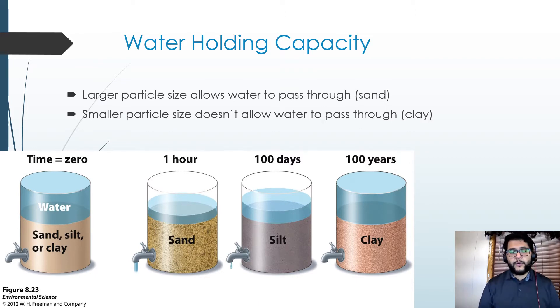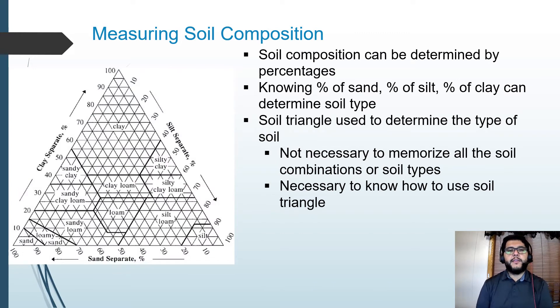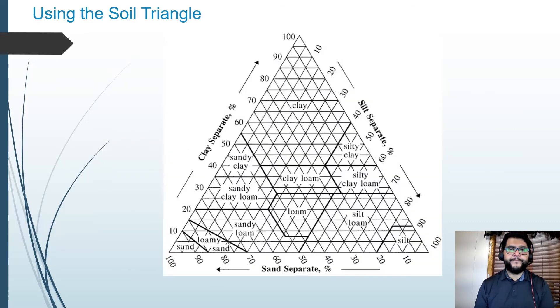We measure this using a soil triangle. It's important to note that you're going to see these probably on the AP exam in many multiple choice questions. You're going to have to know the percentages and be able to determine where on the soil triangle it falls. You don't have to memorize all these different soils—it's just important to know how to use the triangle and which is the best kind. You probably want to be somewhere in the middle of the triangle here towards loam or clay loam, because that means your soil is going to be able to hold enough water but it's still not going to hold it forever.